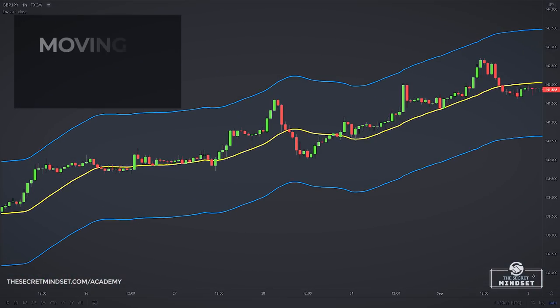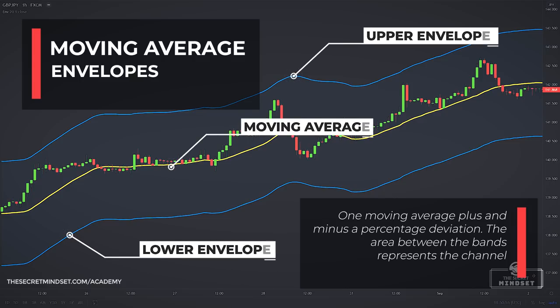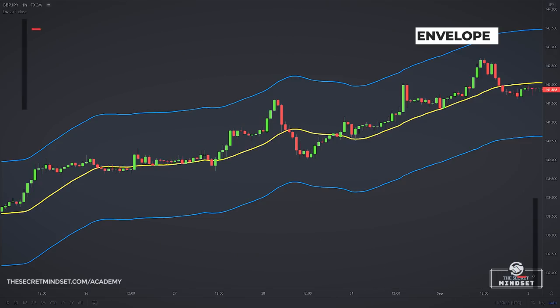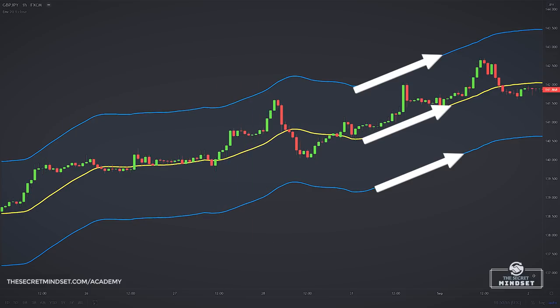Moving average envelopes consist of a moving average plus and minus a percentage deviation. When you apply the envelope indicator, you will notice two lines or bands which appear above and below the price — these lines are called upper and lower envelopes. Also, the area between the bands represents the channel. The line within the channel is a moving average. The bands move in parallel with the moving average because the distance away from it is constant. Each envelope is set the same percentage above or below the moving average, creating parallel bands that follow price action.